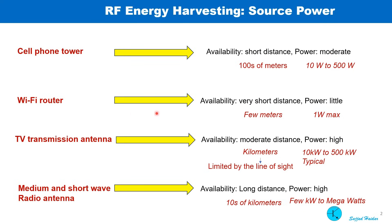Wi-Fi router, only few meters and the power limited to 1 watt maximum. TV transmission antenna, kilometers of range, limited by the line of sight, and power is high, 10 kilowatts to 500 kilowatts typical.